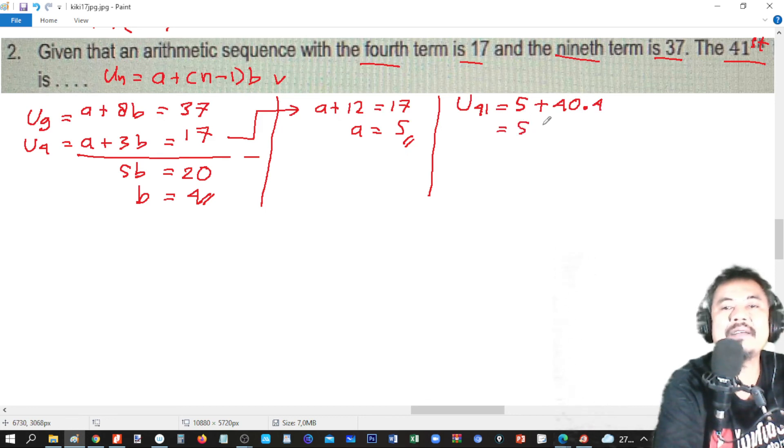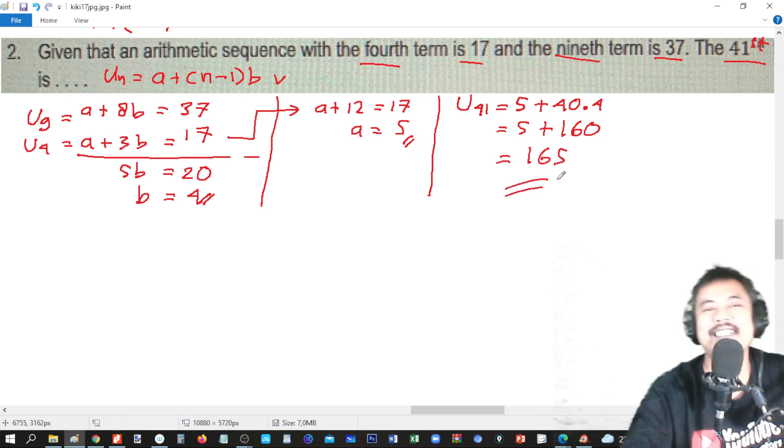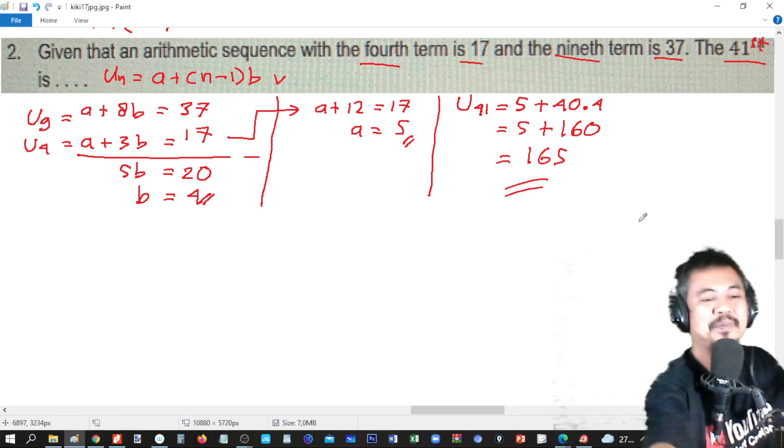So, this is 5 plus 160. So, the final answer is 165. This is it. Okay. This is number 2. And now, 3.